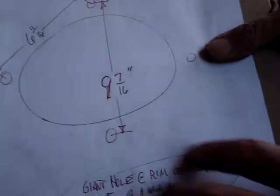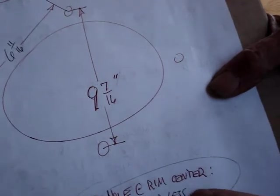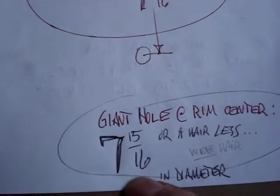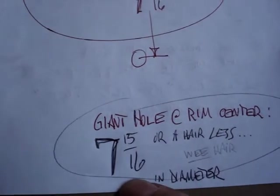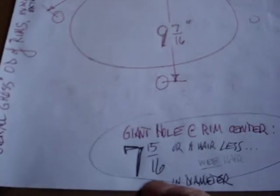Now the giant hole in the center of the rim, that being this, well you saw those, you know what we're talking about here. The giant hole at the rim center is 7 and 15/16ths or a hair less. So we're not... I know what a 32nd of an inch is and I own dial calipers and I know how to use them.